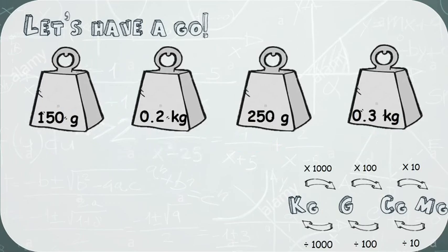Okay, so here they are now in the correct order. Now you must remember if you're doing this in a test, although you may have converted it to make it easier, when you actually write them in the correct order you have to go back to the original unit that they were measured in. So as you can see it goes 150 grams, 0.2 kilograms, 250 grams, and 0.3 kilograms.